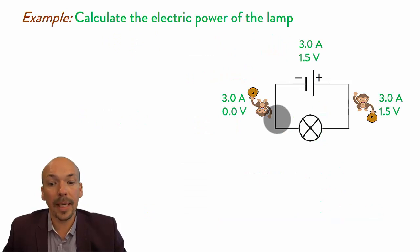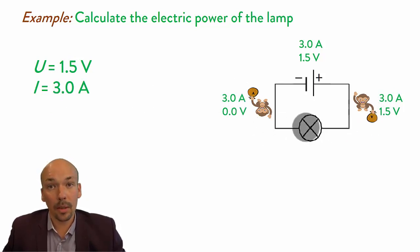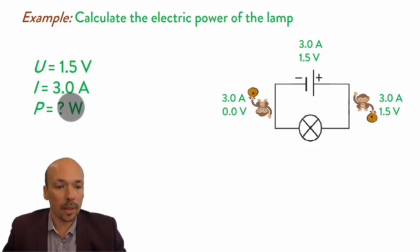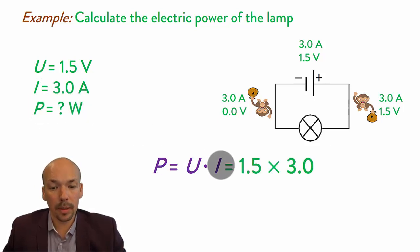Now an example: calculate the electrical power of the lamp. We have a few things given. We know the voltage is 1.5 volts before the lamp and 0 voltage after, so the lamp is using 1.5 volts. The amperage is 3 because 3 are going through the lamp. It's not using amperes, but the amperes are passing through, so it has a current of 3.0 amperes. We multiply 1.5 with 3.0 and we get 4.5 watts. That's the electrical power of this lamp.